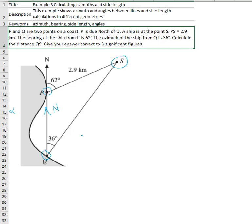The ship is 2.9 kilometers away from point P with an azimuth of 62 degrees from the north. The ship is also at 36 degrees azimuth from point Q. We are required to find the distance between the ship at point S and point Q.